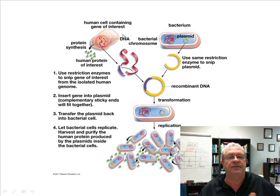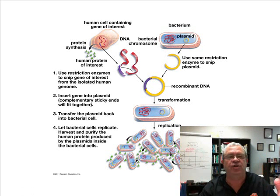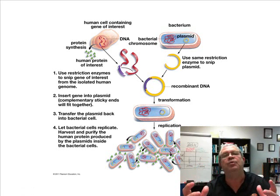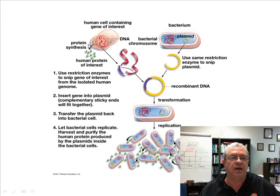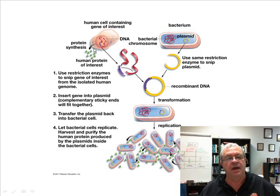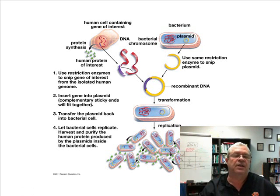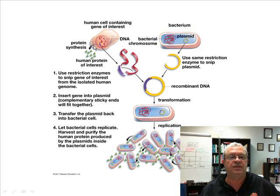Let's start over here to the upper left. We have a human cell containing the gene of interest — let's say it's the HGH gene. We're trying to trick a bacteria cell into producing human HGH. The green triangles represent the human protein of interest, HGH. The arrow represents protein synthesis — transcription and translation. You start with a gene and you end up with a protein.